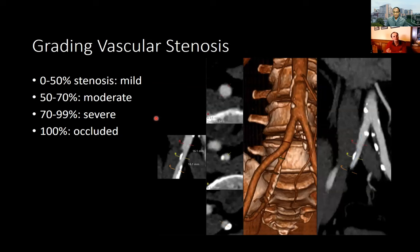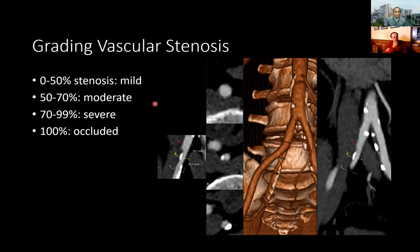In terms of grading vascular stenosis, my advice to trainees is to not overthink it. Using ranges of grades — moderate to severe — is pretty hard to argue with. We're trying to give a gestalt of how bad the disease is. This is not like cerebrovascular disease or carotids where we need that degree of precision, but it is helpful to give the vascular surgeon and colleagues who might read a follow-up an accurate idea of the degree of stenosis.